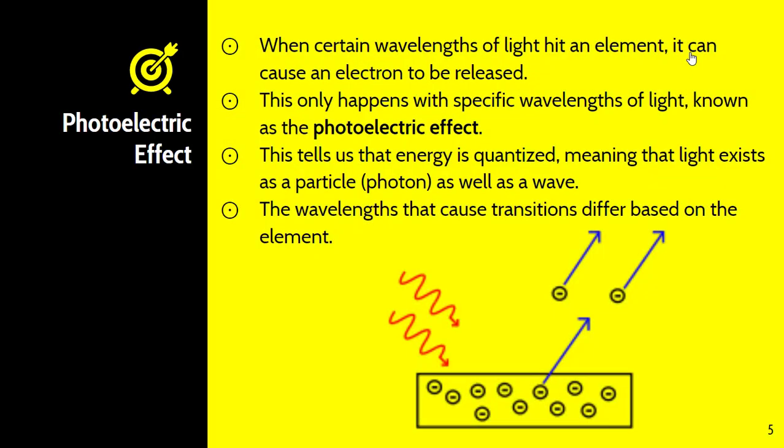Speaking of photoelectric effect, when certain wavelengths of light hit an element, it can cause an electron to be released. You can decrease or increase the wavelength, but you may not necessarily get an ejection of an electron. It only happens with specific wavelengths of light. This is known as the photoelectric effect and it told us a lot about electrons. It told us that energy is quantized, meaning that light exists as a particle as well as a wave. You've probably heard of the wave-particle duality. You should also be familiar with the de Broglie wave experiment.